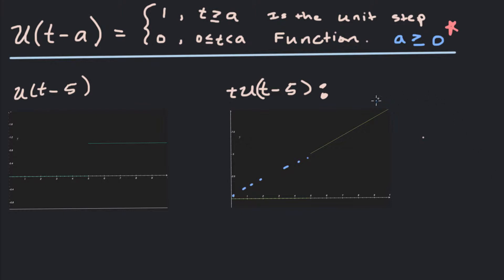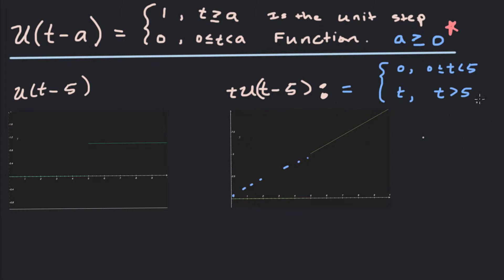If you write that out as a piecewise function, that would be 0 for 0 ≤ t < 5, and then equal to t for t ≥ 5. You can always go back and forth between unit step functions and these piecewise functions.